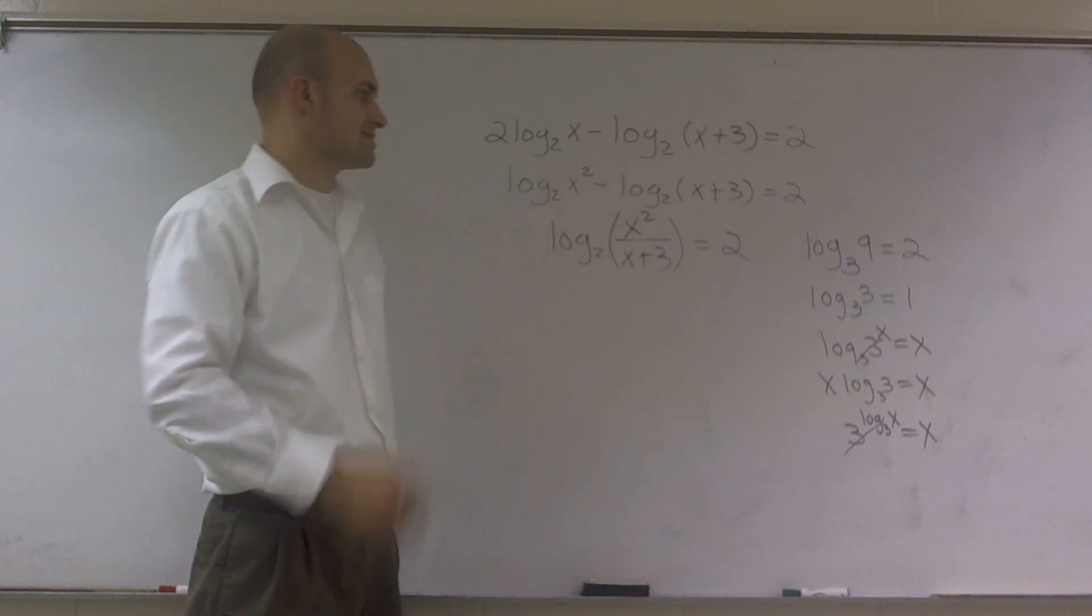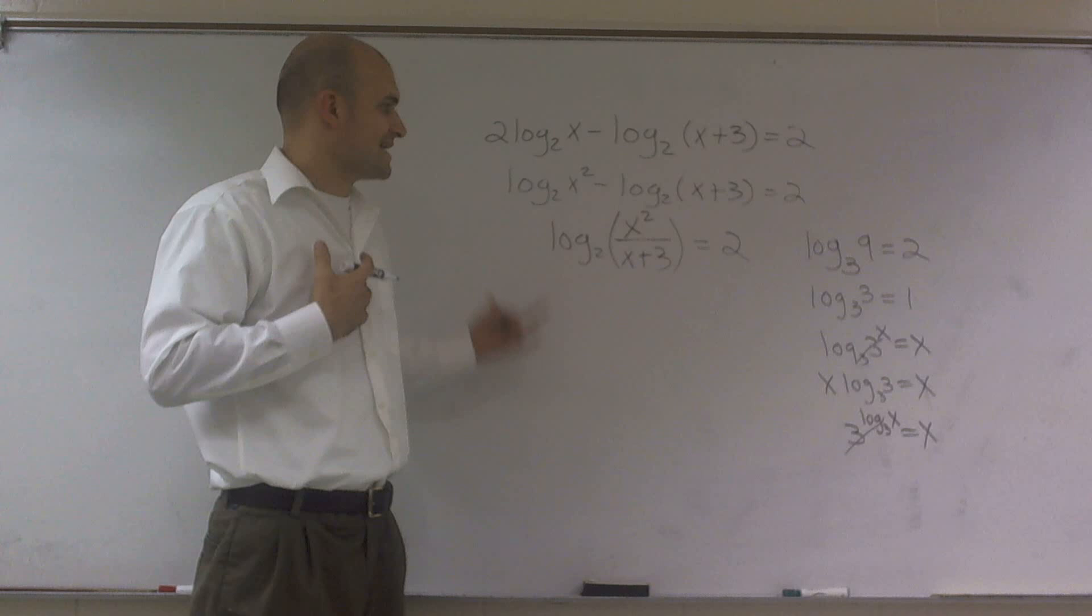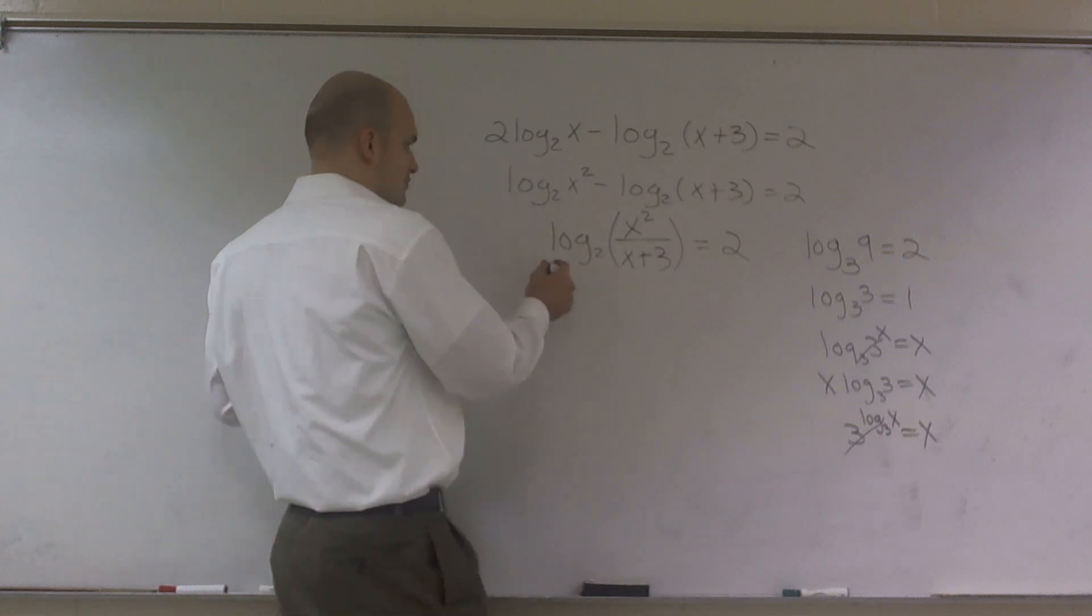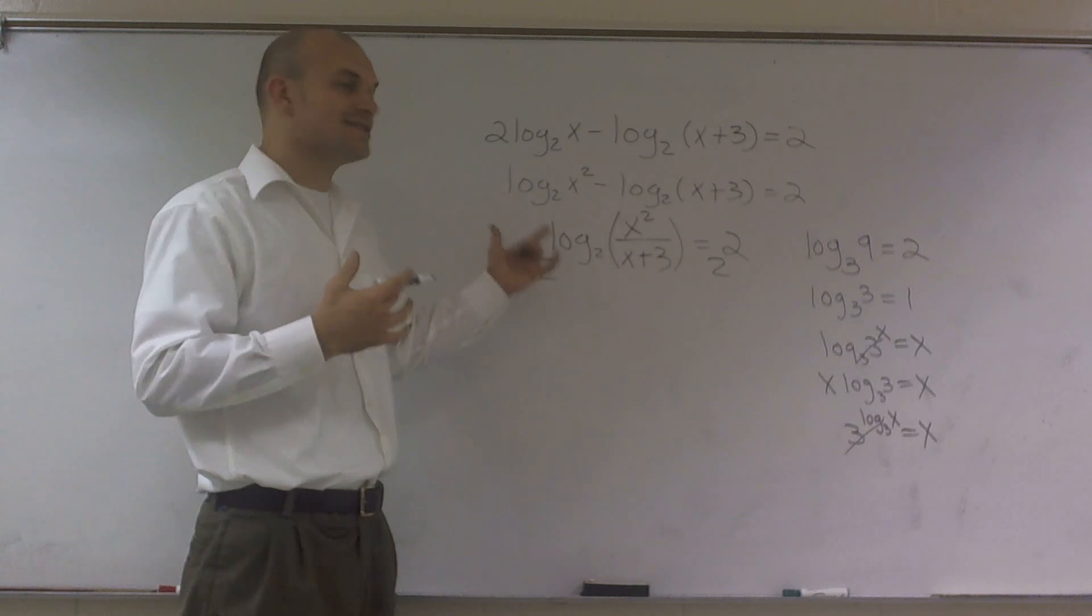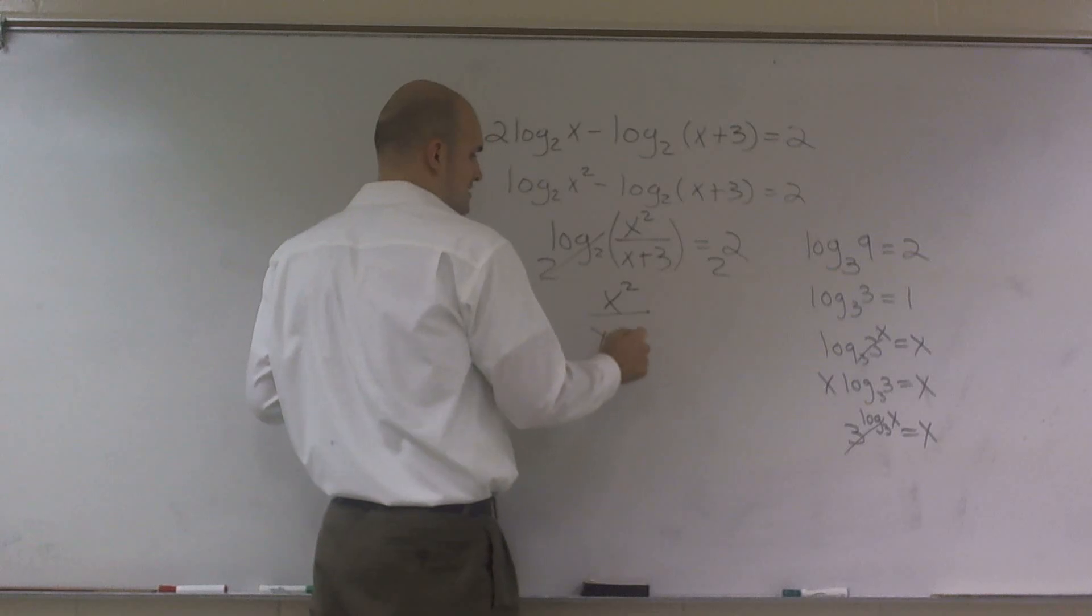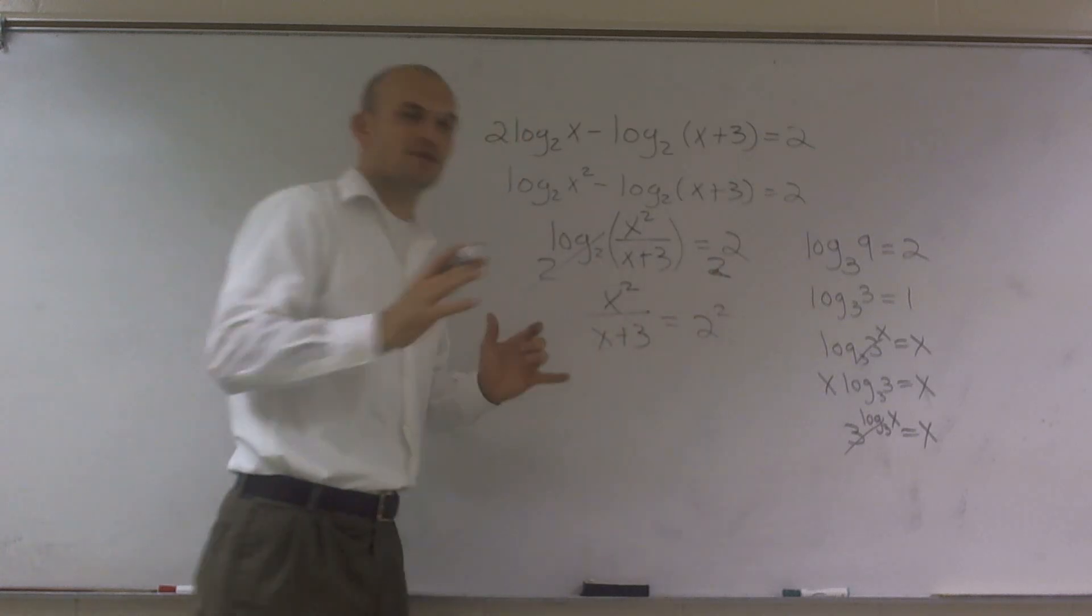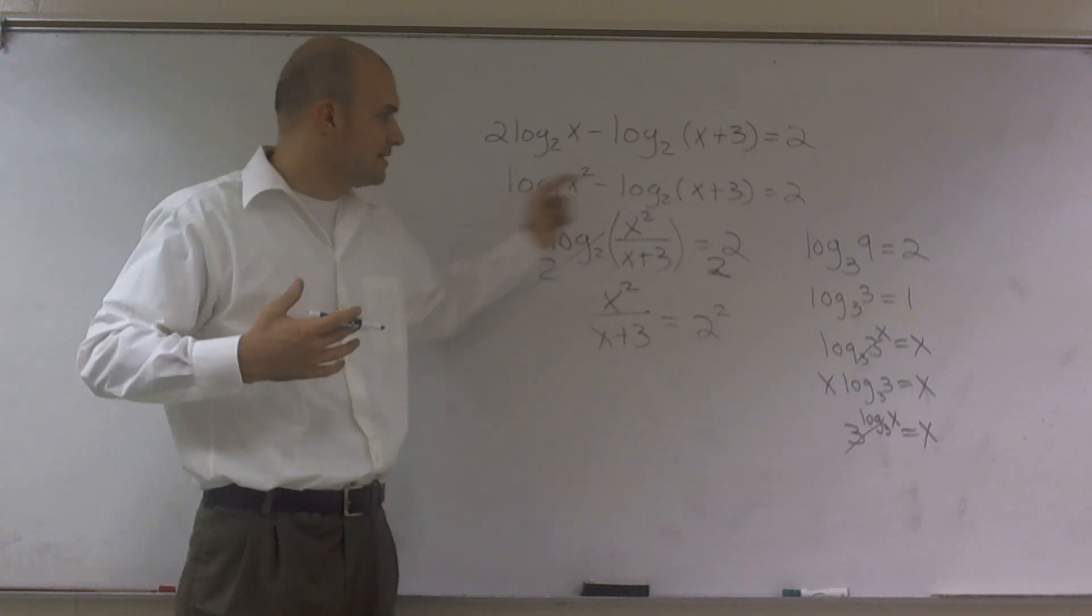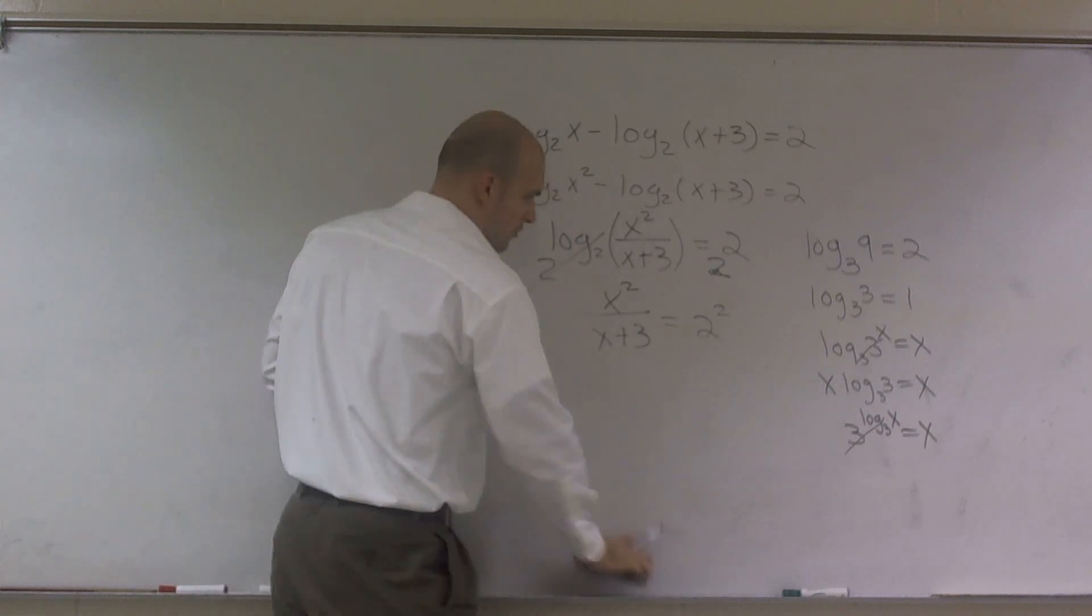So what I want to do is I need to get rid of this logarithm. Now, there's a couple ways you could do this. You could just rewrite it in logarithmic form, or in exponential form, which 2 raised to the second power equals x squared divided by x plus 3. Or what we could do is we could also exponentiate each side to the base 2. Therefore, those two would cancel out, and I'd be left with x squared over x plus 3 equals 2 squared. Now, if that just really confused you, just think of this this way. Just put it into exponential form. 2 raised to the second power equals this. It's the same thing.